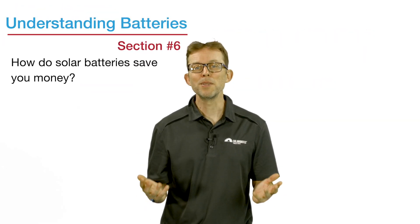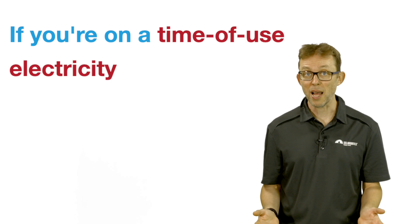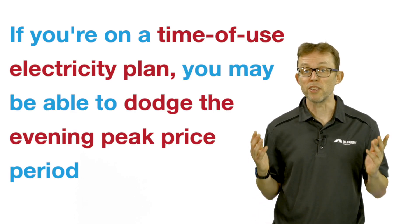Point number six. How do batteries save you money? Batteries store surplus solar energy for use at night, meaning you charge your battery with free electricity generated during the day. At night, instead of drawing from the grid, use the energy stored in your battery. If you're on a time of use electricity plan, you may be able to dodge the evening peak price period altogether. With a big enough solar and battery system, you may never pay an electricity bill again. If you're part of a virtual power plant, VPP, your batteries also support the grid and can earn credits, which can be thought of as a bonus feed-in tariff for doing so.